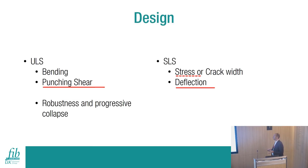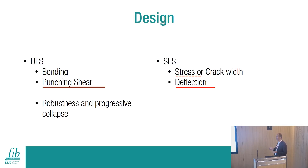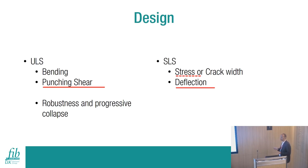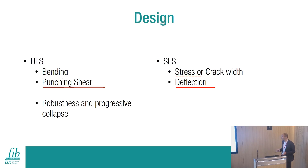When we design PT slabs, the main design checks are: at ultimate limit state, bending and punching shear; at serviceability limit state, stress and/or crack width and deflection, with the SLS checks usually governing the design. We can have punching shear problems on upper levels when the column size gets smaller, as well as deflection and stress/crack width issues.